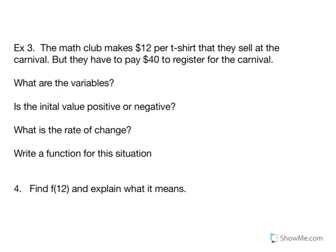Example three. The math club makes twelve dollars per t-shirt that they sell at the carnival, but they have to pay forty dollars to register for the carnival. So the first thing we're going to ask are what are the variables? That is, what is our x and what is our y? Remember our y always depends on our x. We don't have to call these numbers x and y, of course. We can use any letter we'd like, but x and y are typical. So in this case, what are we talking about? We're talking about the math club.